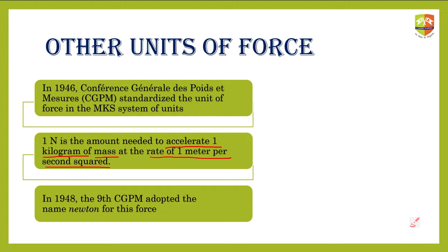In 1948, the ninth CGPM officially adopted the name 'newton,' defining it as one kilogram·meter per second squared (1 kg·m/s²). So it has been almost 70-plus years that we have been using newton as the unit of force. Before that, there were other units in use.